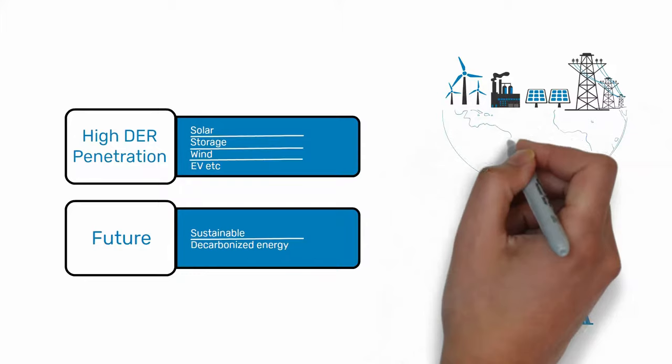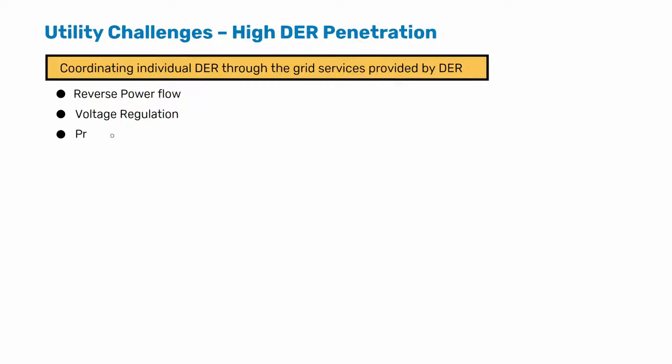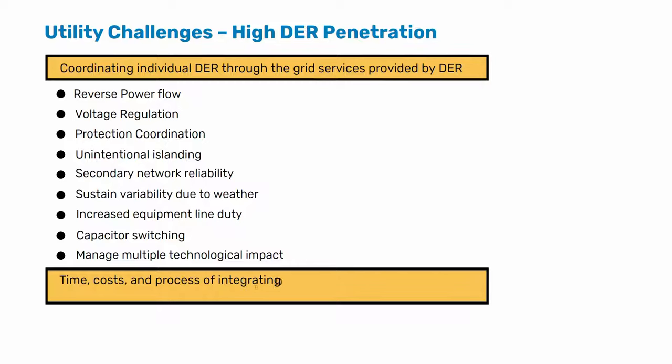However, decentralizing the electricity grid introduces a whole lot of new instabilities. DER shall provide grid services for operators by coordinating individual DER. Some of the critical services which need to be supported by DER are: controlling reverse power flow, regulation of voltage throughout the grid where there are multiple DER connected, coordination of protection logics, avoiding unintentional islanding, improving network reliability, and sustaining variability due to weather conditions.